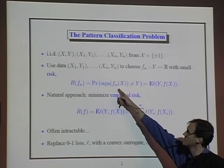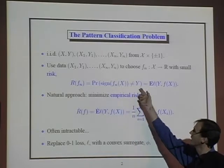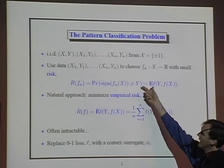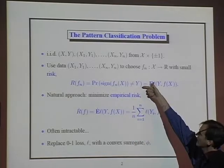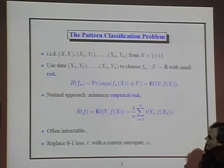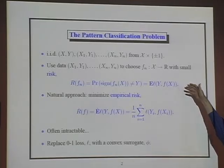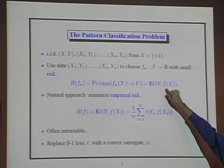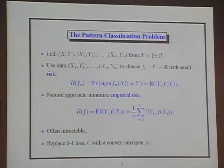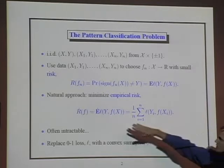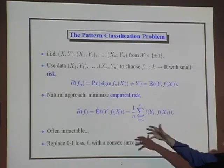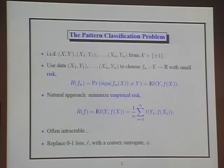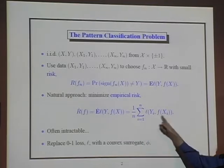If the real value is greater than zero, we predict plus one. We suffer a penalty of one when we get the sign wrong. So we're interested in minimizing this probability of misclassification. We define this loss function L as just getting the sign wrong, so we're interested in minimizing that expected loss. A natural approach is to choose a function F from some class to minimize the empirical risk — the sample average of losses.